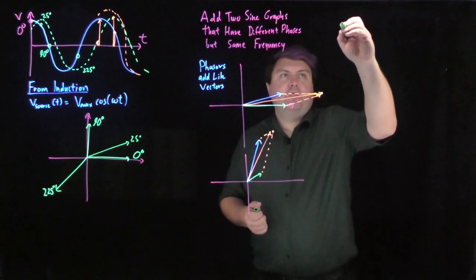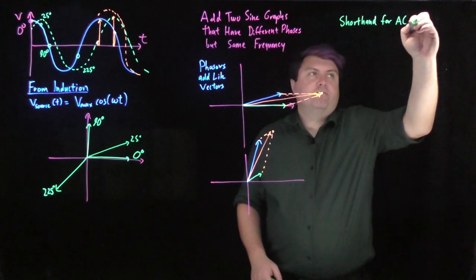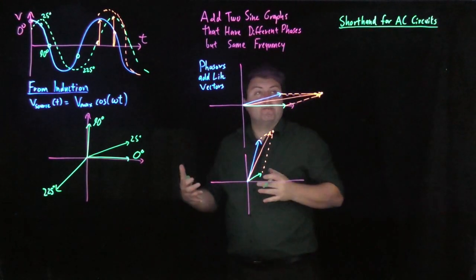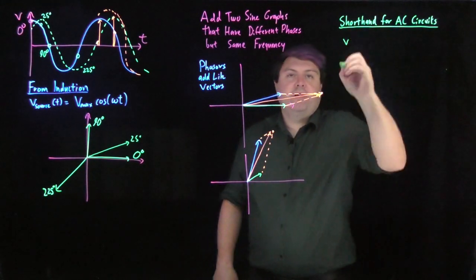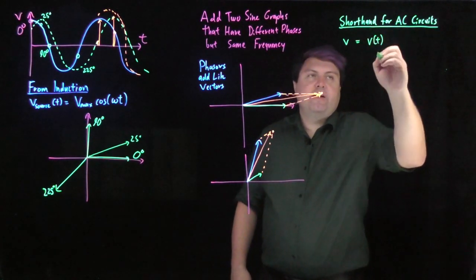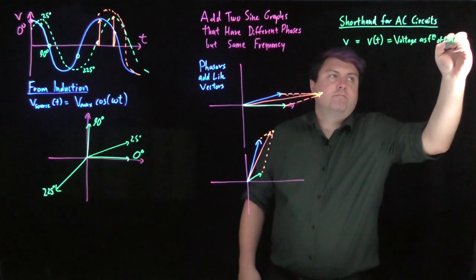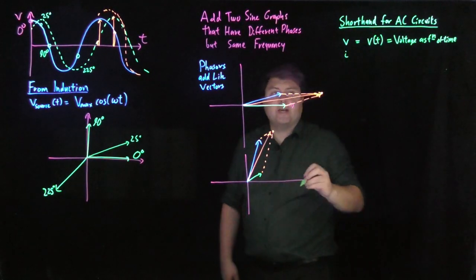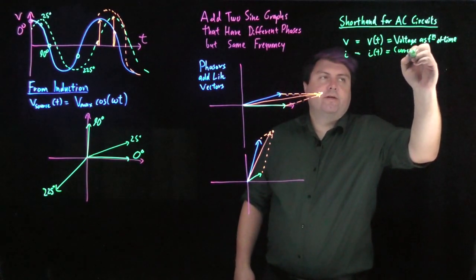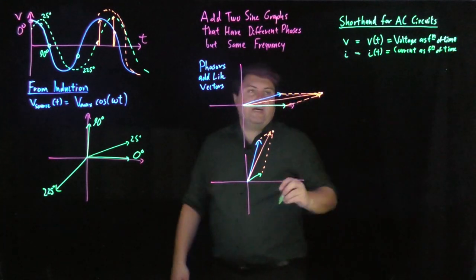As we're doing that, we want to have some shorthand for AC circuits. I don't agree with this shorthand, so I'm going to try to write it out as much as possible. But whenever your book or whenever any other source talks about a lowercase v, what they actually mean is voltage as a function of time. If they ever use a lowercase i, they actually mean i of t, which is current as a function of time.